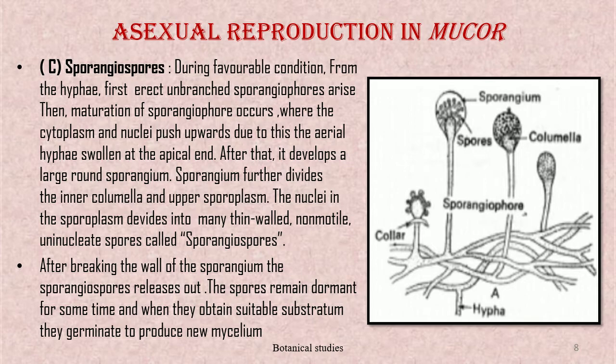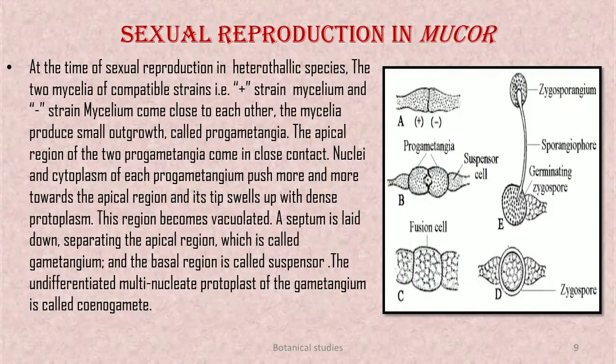Sexual reproduction in Mucor: at the time of sexual reproduction in heterothallic species, the two mycelia of compatible strains — positive strain mycelium and negative strain mycelium — come close to each other. The mycelia produce small outgrowths called progametangia.